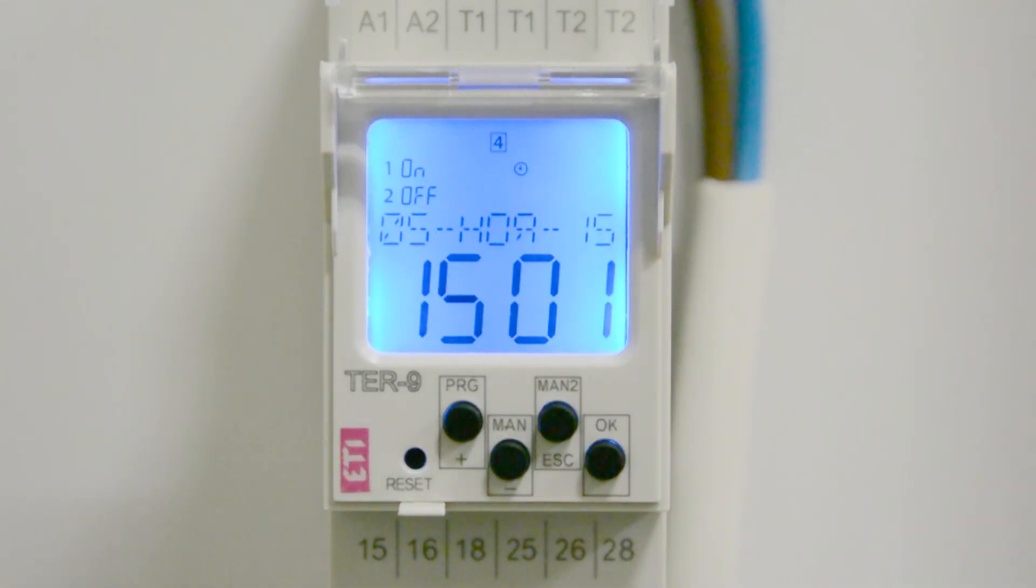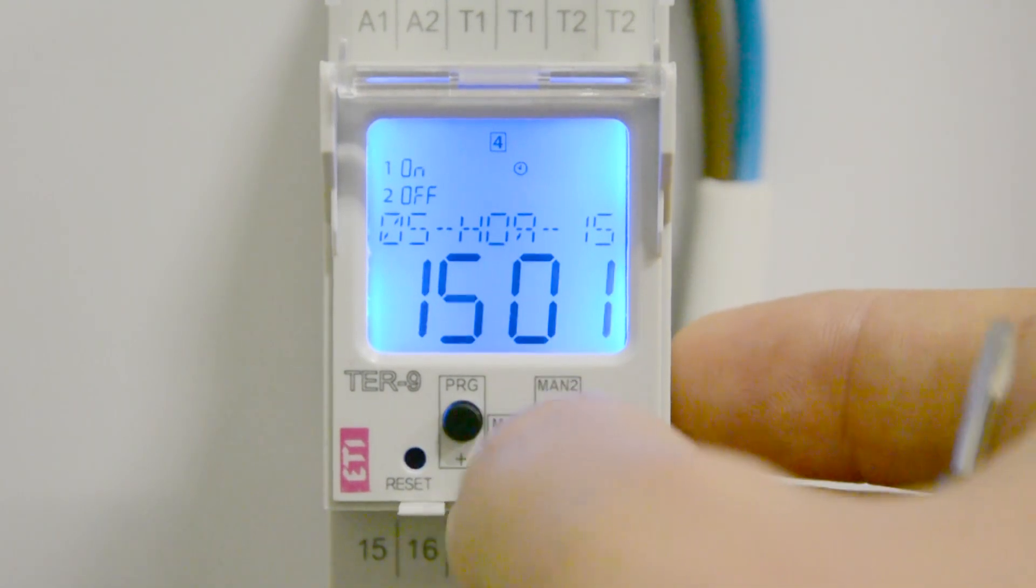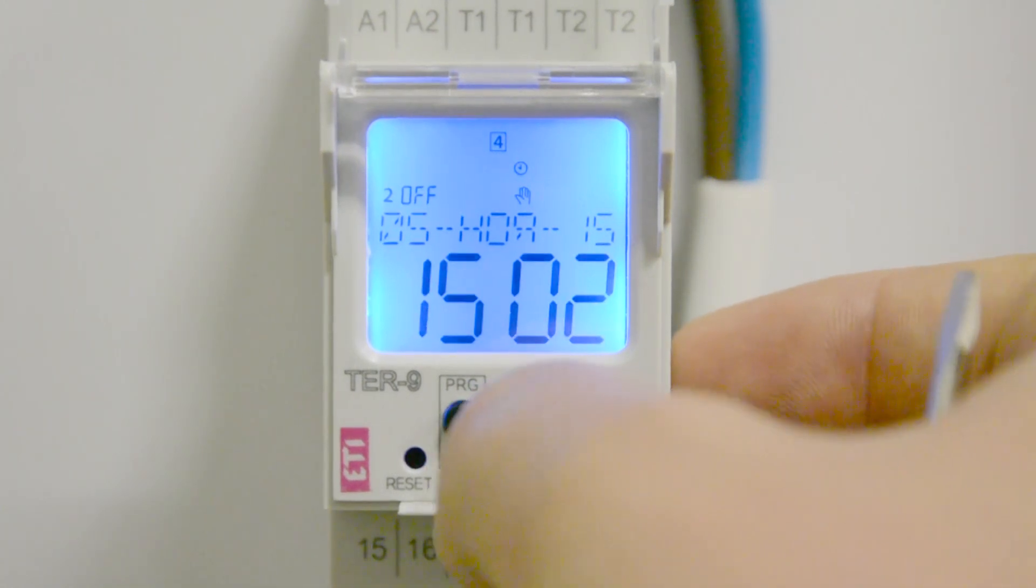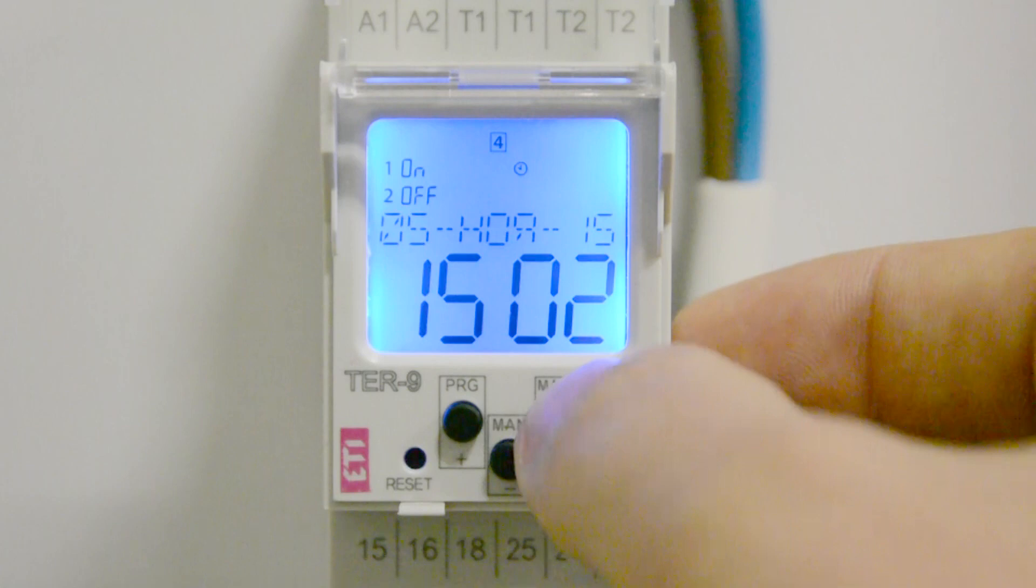The device can also be controlled manually. By briefly pressing the MAN and MAN 2 buttons in the start menu of the relay, we change the position of the corresponding relay contacts. When configuring this relay, it is necessary to remember the priority of operating modes.